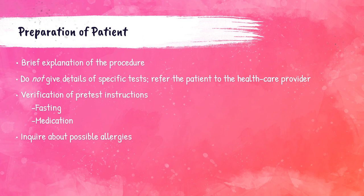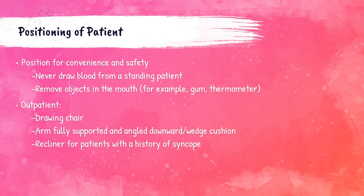To prepare a patient for venipuncture, the phlebotomist must first reassure the patient throughout the procedure, starting with a brief explanation so they know what to expect. It is not the phlebotomist's job to give specific details of the tests — they can state the name of the test but not its purpose. If fasting is required, it must be verified. The patient should be asked if they are taking any blood thinners, as pressure may need to be applied longer after the draw. Patients should also be asked about allergies — if allergic to latex, they must be assured that the tourniquet, gloves, bandage, and supplies are latex-free.